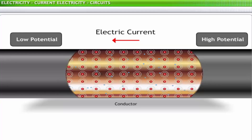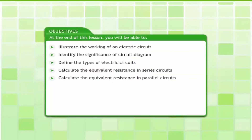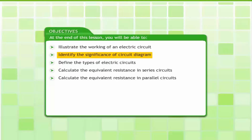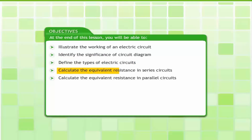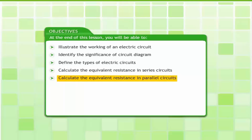In this lesson, you will learn about the types of electric circuits and examine how a closed electric circuit works. At the end of this lesson, you will be able to illustrate the working of an electric circuit, identify the significance of circuit diagrams, define the types of electric circuits, calculate the equivalent resistance in series circuits, and calculate the equivalent resistance in parallel circuits.